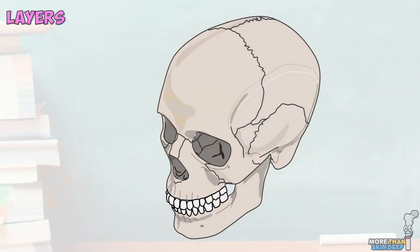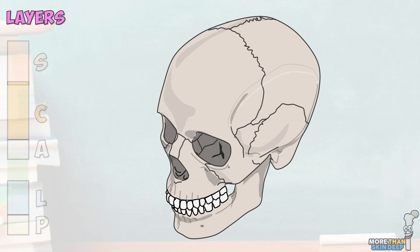The average scalp is 5–6mm thick, and when cut can be divided into five structurally unique layers. Conveniently, we can remember these layers using the acronym SCALP. The most superficial layer of the scalp is the skin. This ranges in thickness from around 1–2mm, with the thinnest overlying the vertex and the thickest just behind the ear. This layer is populated with sebaceous glands and is the hair-bearing part of the scalp.